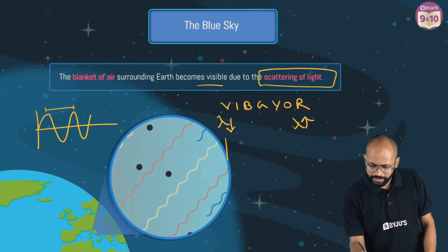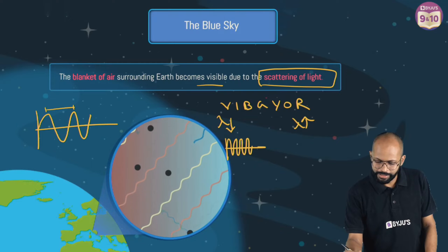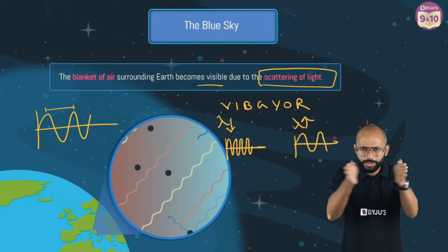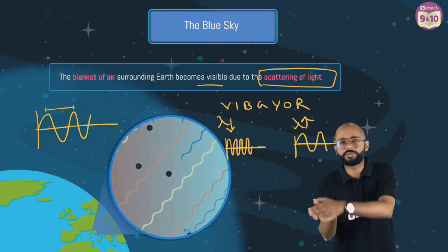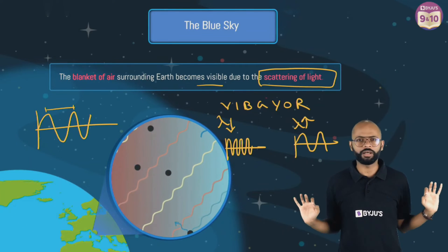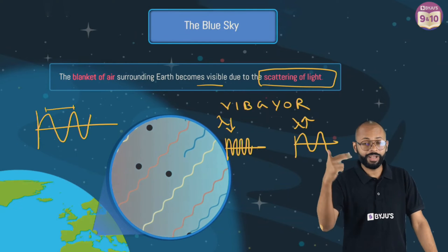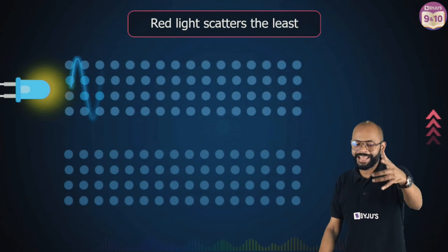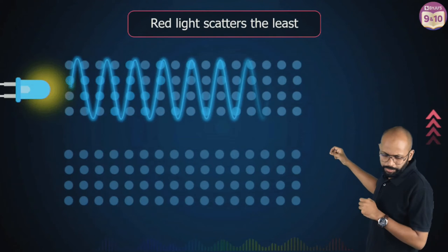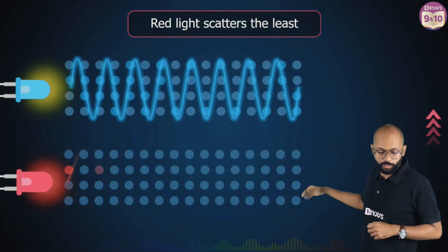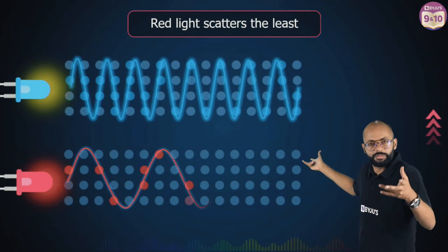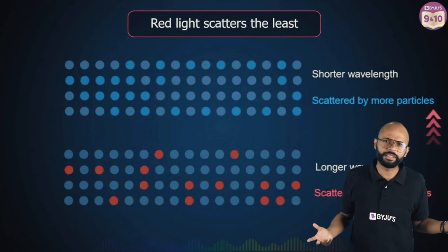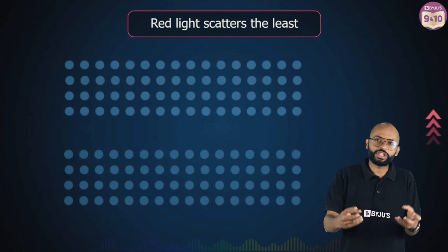For a color with shorter lambda, the waves will be closer to each other — violet waves look compressed together. For red, with longer lambda, the waves are more spread out. Now, shorter wavelengths scatter more because they interact with more particles along their path. Blue and violet, being closer together, encounter more particles to interact with.